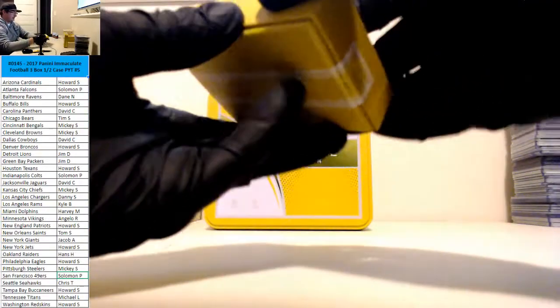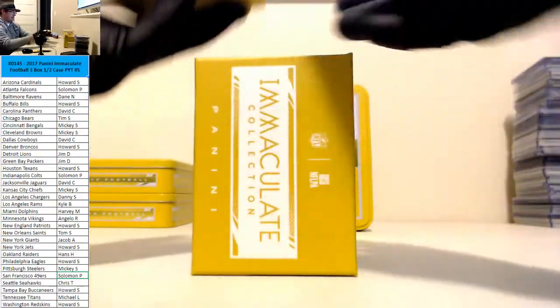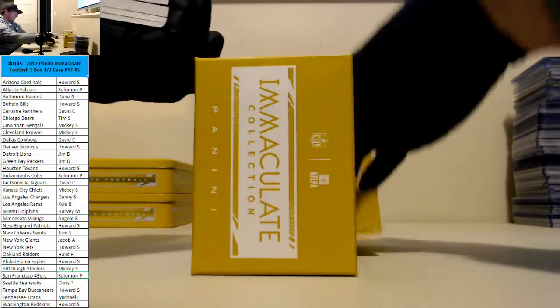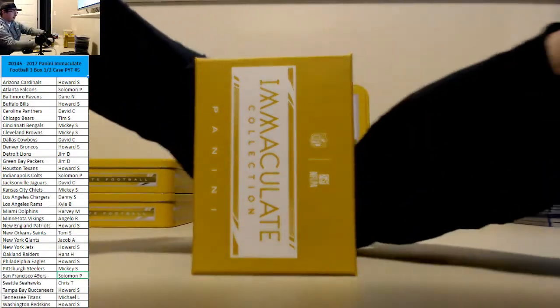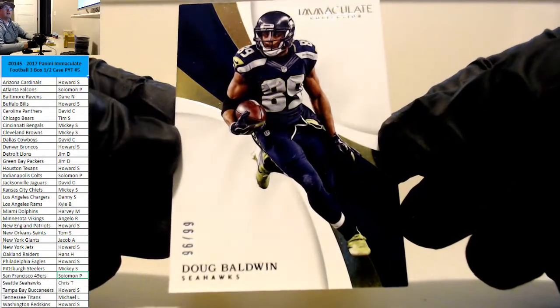Well, pretty sick box. Nice. All right, last one, guys. Ooh, nice one on the back. All right, for the Seahawks, Dougie Baldwin. 96 and 99.